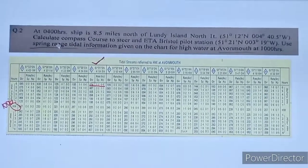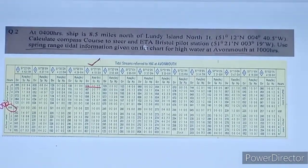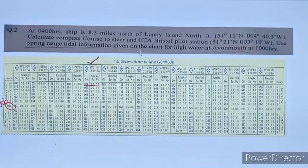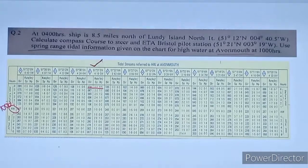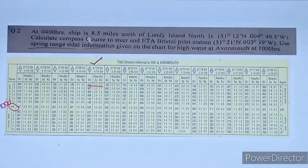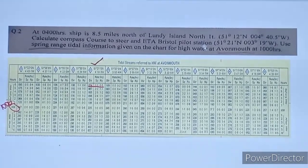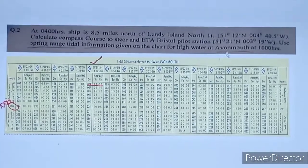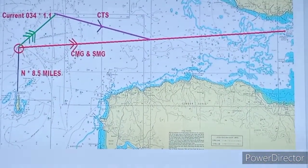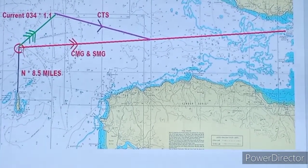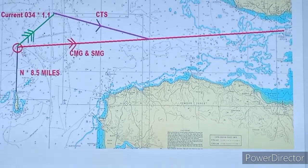Question 2: At 0400 hours, the ship is 8.5 miles north of Nundi Island north. Calculate compass course to steer and ETA to Bristol Pilot Station. Use spring range tidal information given on the chart for high water at Apiolomoth at 10 hours. We mark our fix 8.5 miles north of Nundi Island at 0400, then determine course made good toward Bristol Pilot Station.